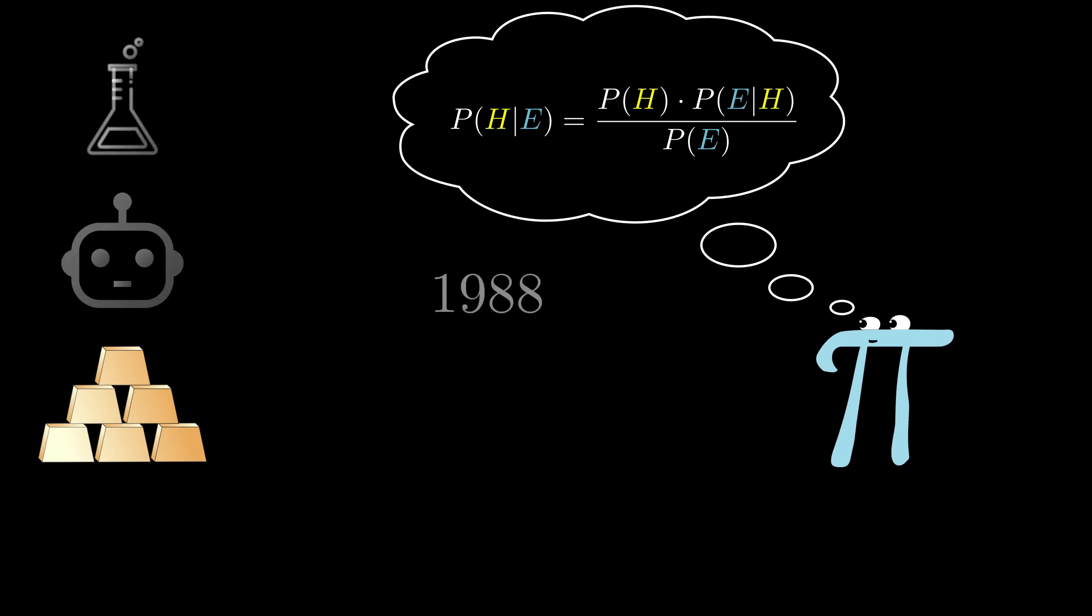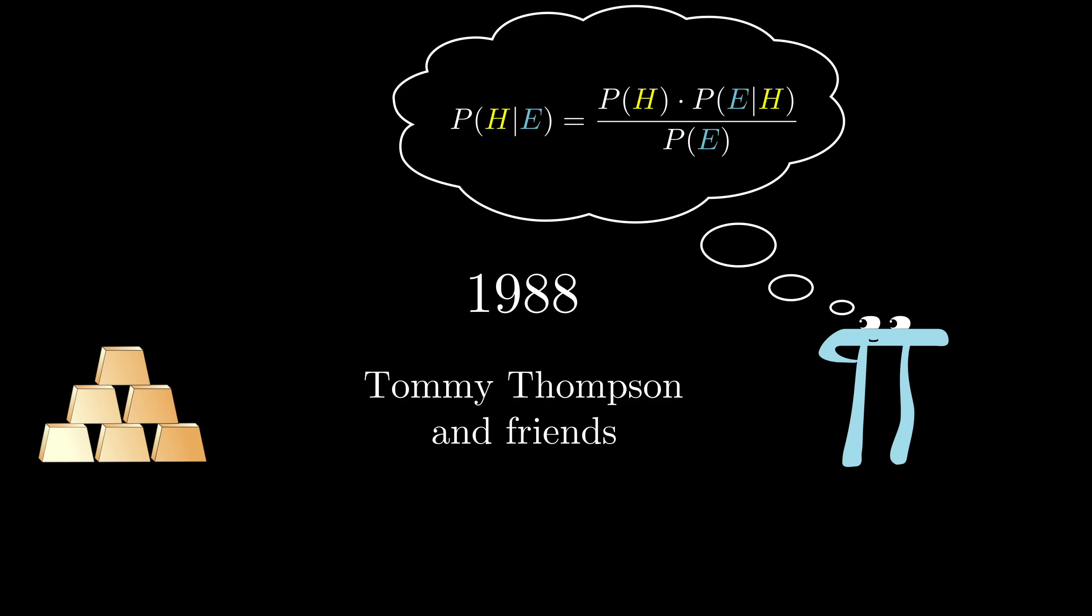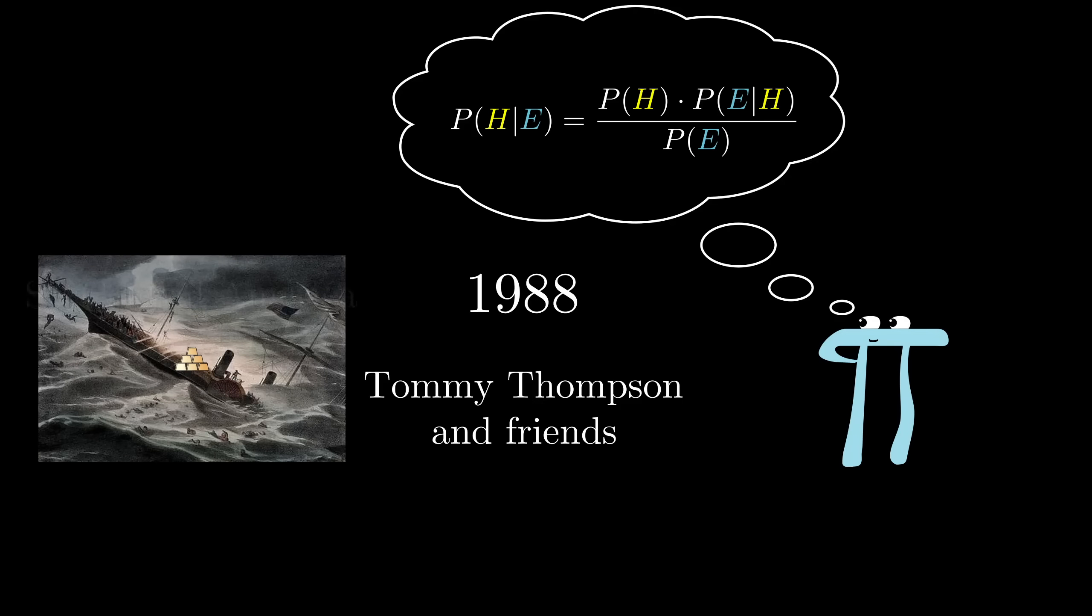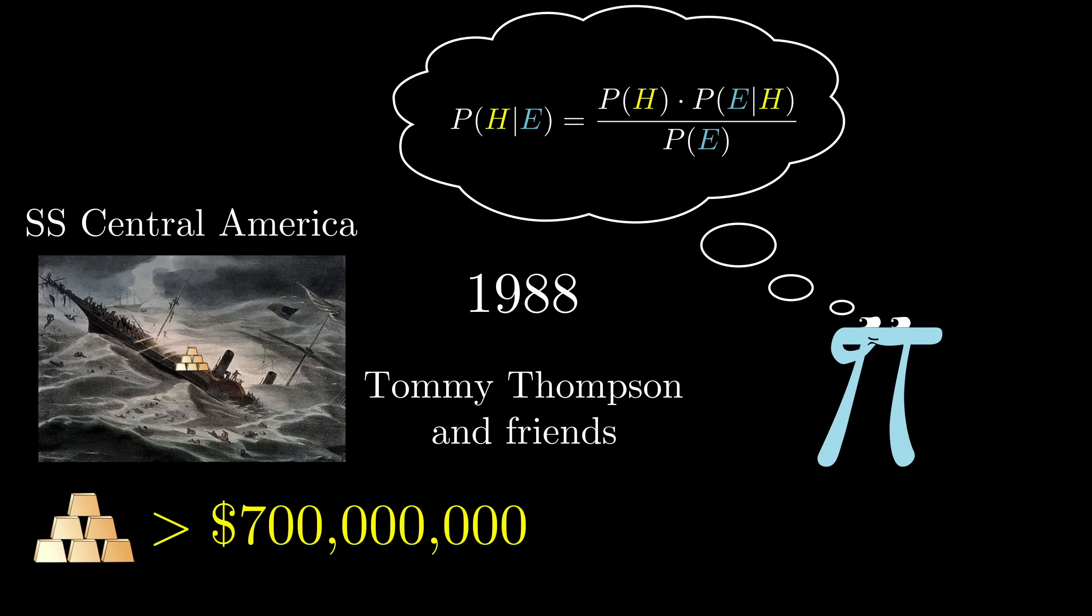In the 1980s, a small team led by Tommy Thompson used Bayesian search tactics to help uncover a ship that had sunk a century and a half earlier, and the ship was carrying what in today's terms amounts to $700 million worth of gold.